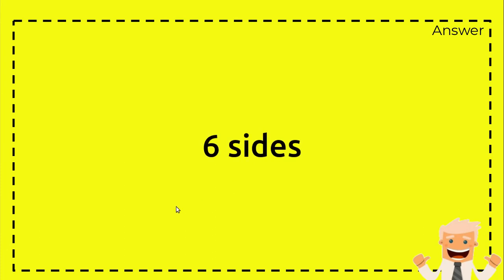Hexagon has six sides because hexa means six. You have penta, you have octa, but hexa means six, which is why the answer is six sides.